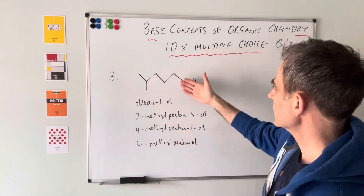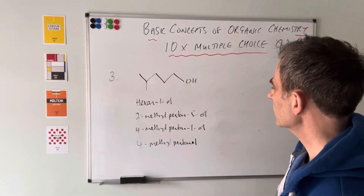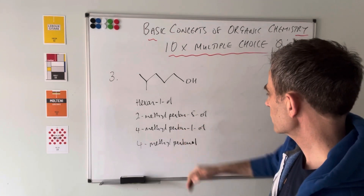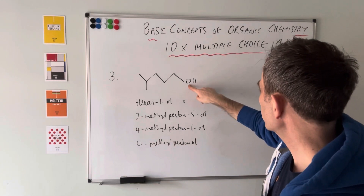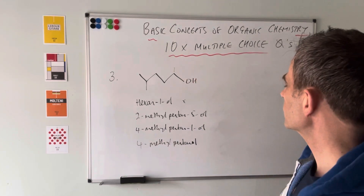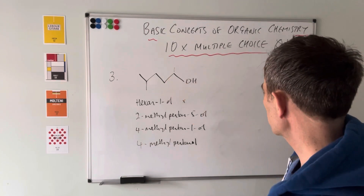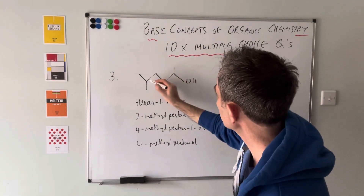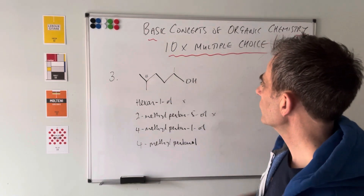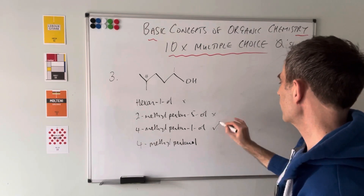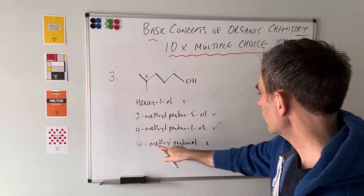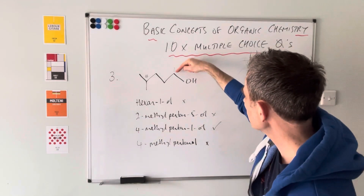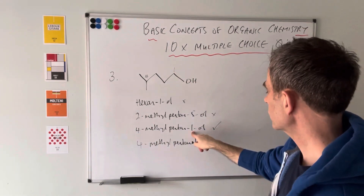Question three: we have an alcohol to name systematically. The longest continuous carbon chain is five, so it's 'pent-', ruling out one option. The OH group is on carbon 1 — the functional group determines which end is carbon 1 — so it's pentan-1-ol, not pentan-5-ol. The methyl branch is on carbon 4, giving the name 4-methylpentan-1-ol. The distractor '4-methylpentanol' is close but must include the '1' to specify where the OH group is.